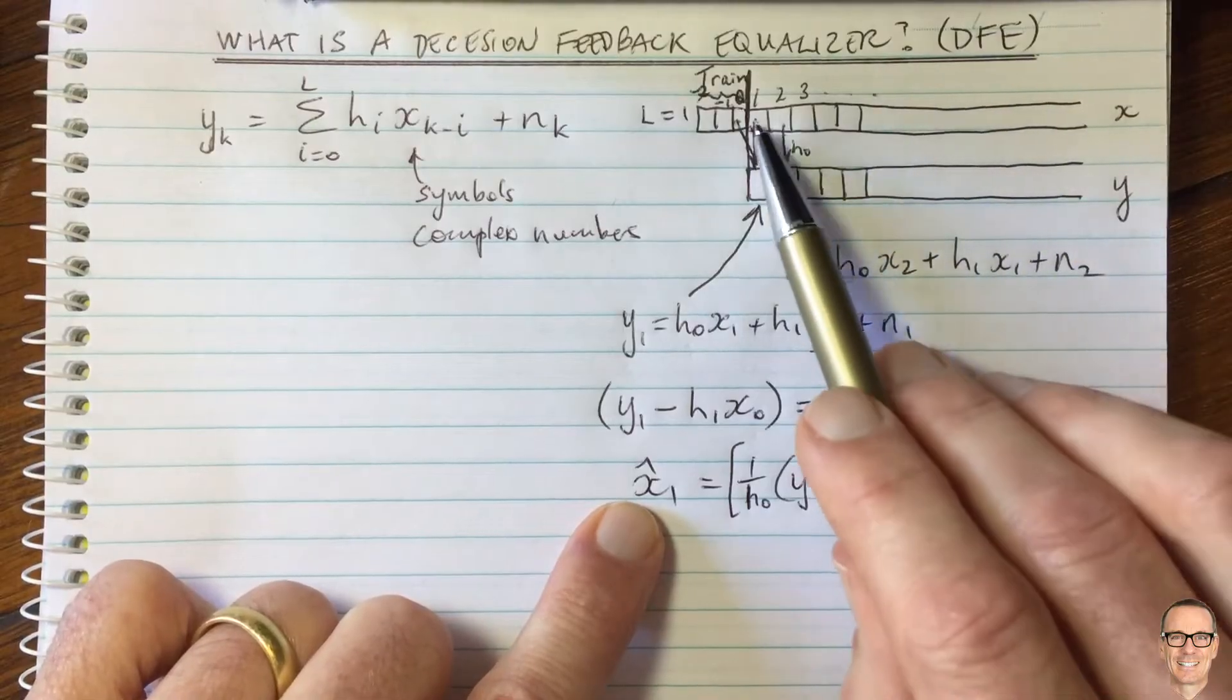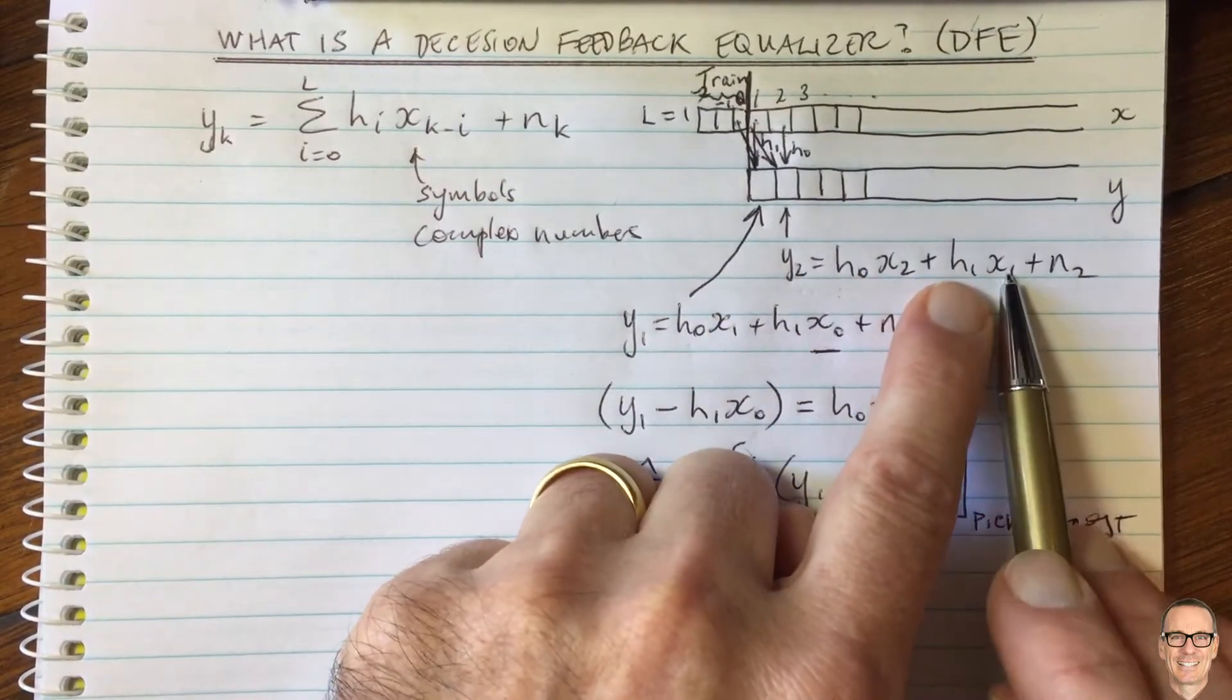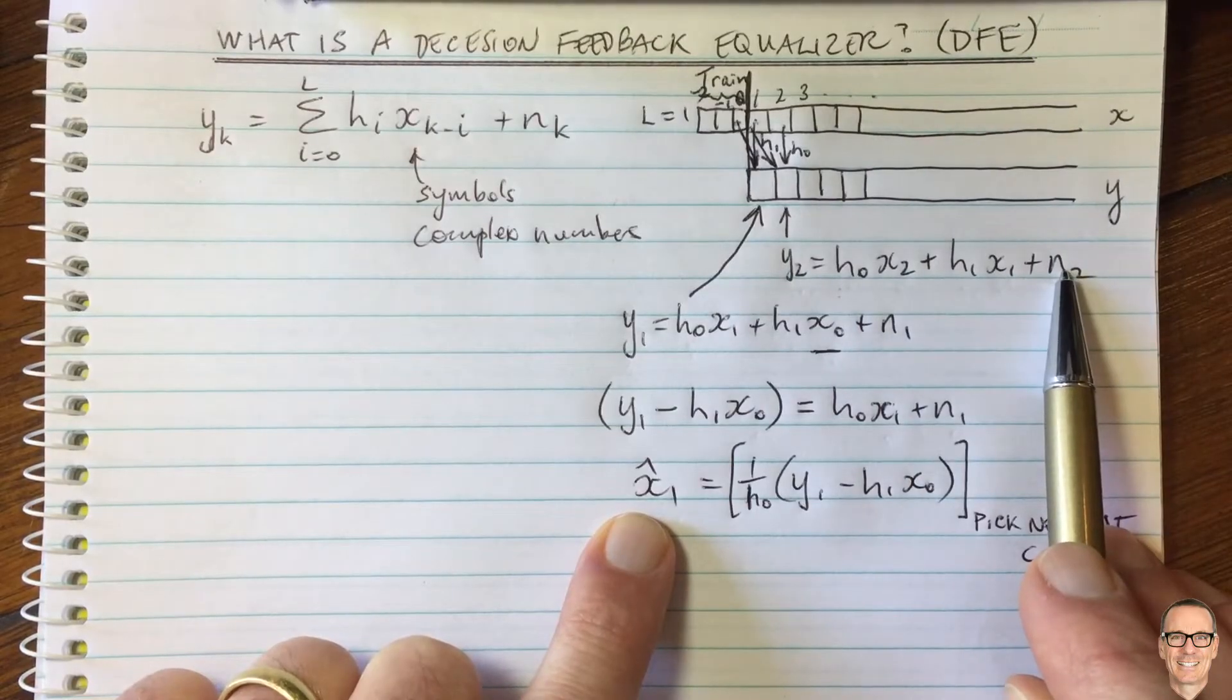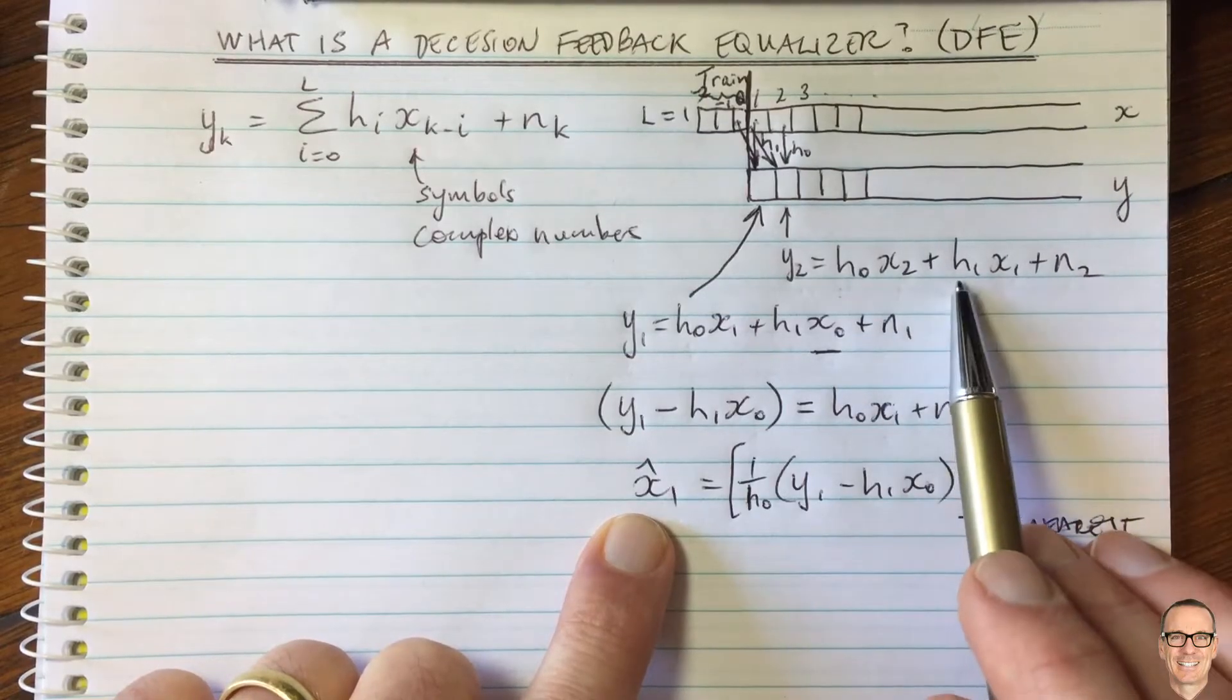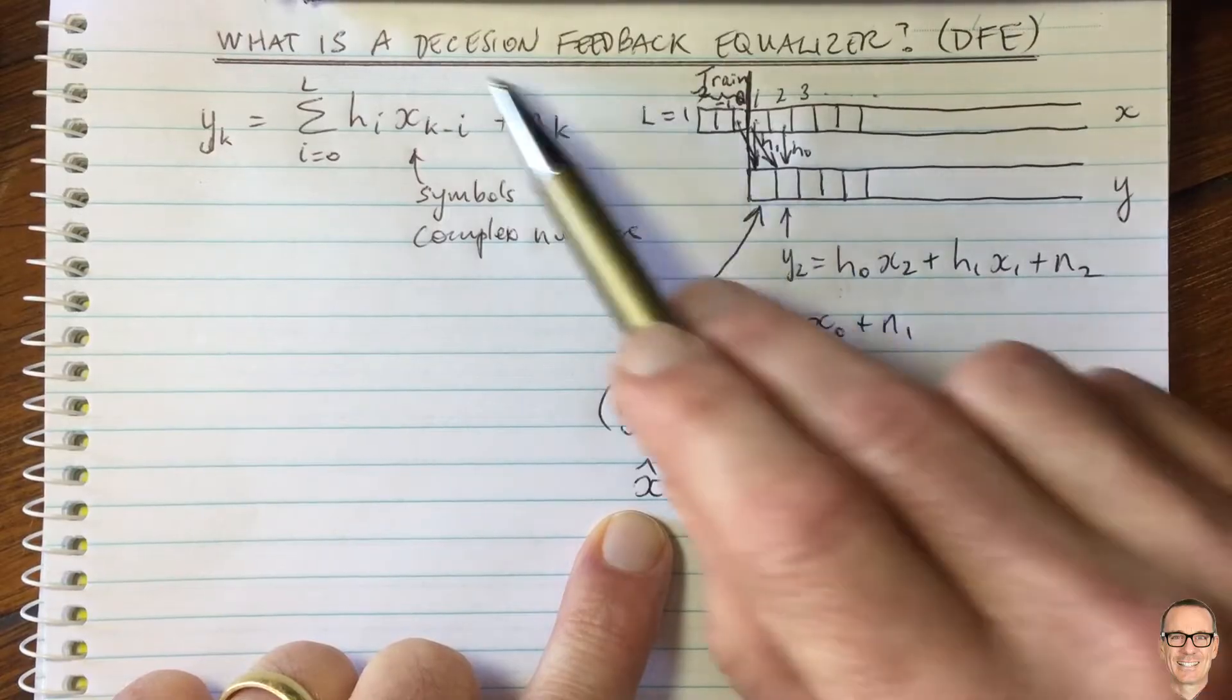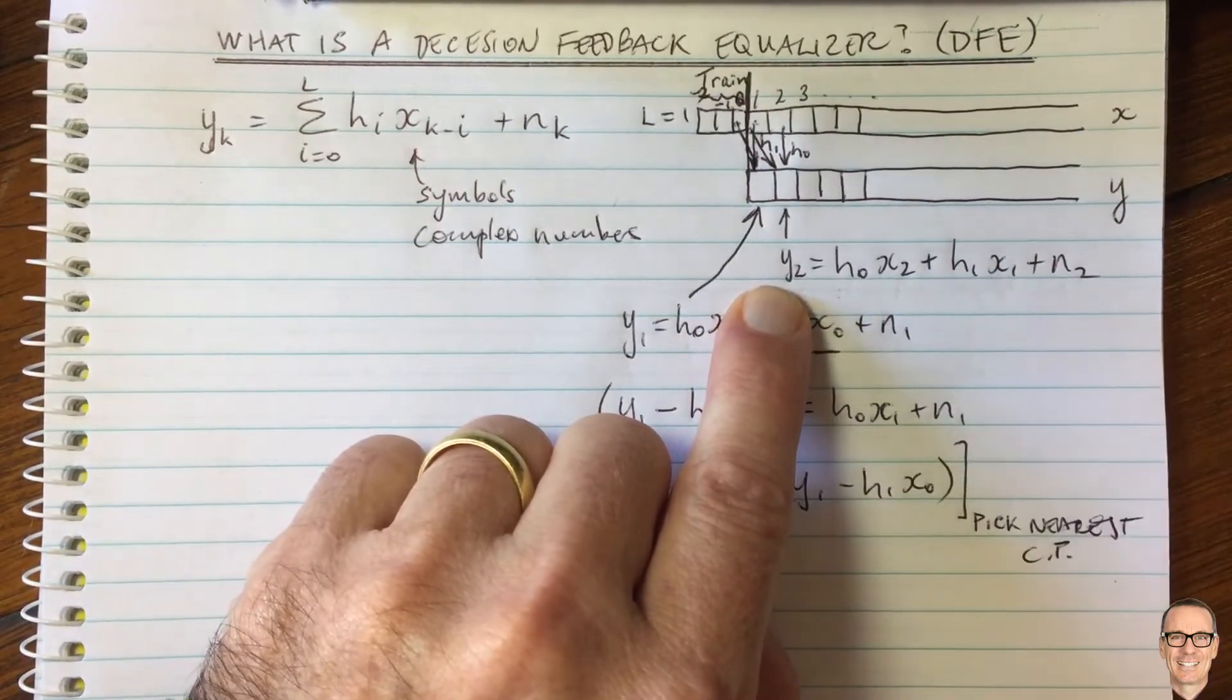And now I think you can see, hopefully you can see now with an estimate of this, you could repeat this process for y2. So you could take y2, and you could subtract off h1 times the estimate of x1 that you've just found, and then you would be left with h naught times x2 plus the noise. And again, you would have generated for yourself a flat fading channel from the ISI by removing the ISI. So you would be doing, so again, to the name here, you would be making a decision, which is this pick the nearest constellation point. So that's the decision.